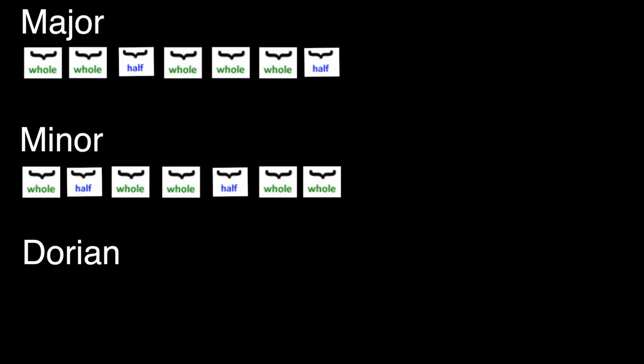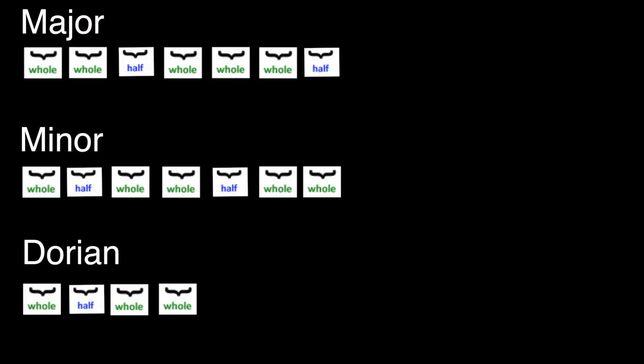Now here is our step pattern for Dorian: whole, half, whole, whole, whole, whole, half, whole. Notice that the first four steps are the same as minor. Because of this, it often gets confused with minor. But it's the sixth scale degree that really makes it stick out as different.